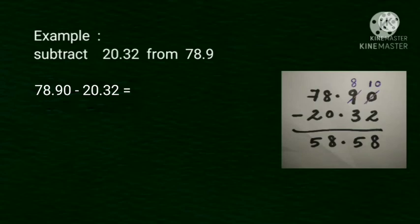So, 78.90 minus 20.32. Then, we subtract 0, 0 minus 2. We borrow 1 from 9. 0 becomes 10. 10 minus 2, 8.